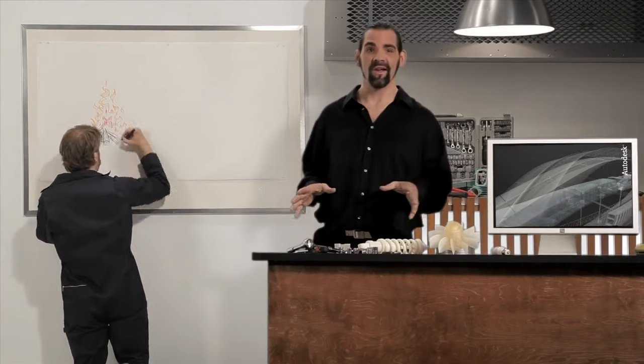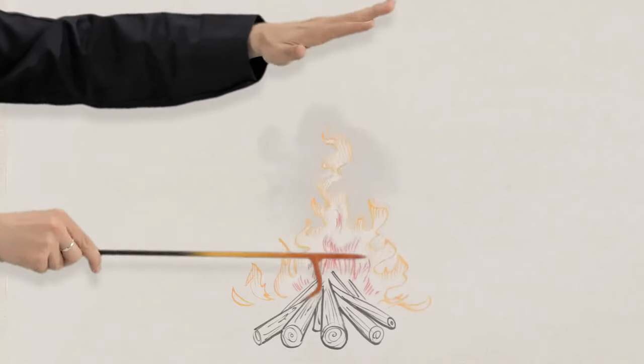Heat's transferred in three ways, through conduction, convection, and radiation. When we control these transfers, we can get huge energy savings.